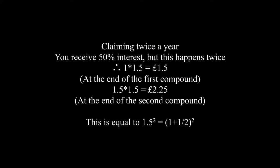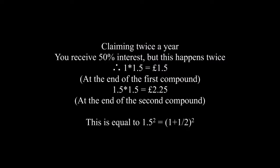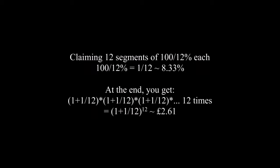If the interest were split up into two 50% segments, then you would have 1 plus 1 half to the power of 2, which is £2.25 in the end. Likewise, if the interest were split up into, say, 12 segments of 8 and a third percent each, then you would have 1 plus 1 twelfth to the power of 12, which is roughly £2.6.